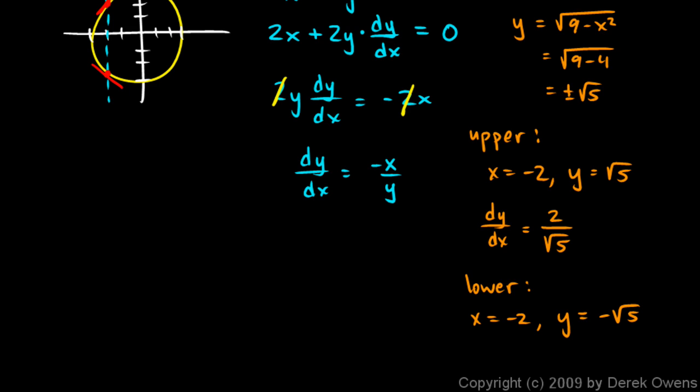And the lower point here has an x value of negative 2 and a y value of negative square root of 5. So the derivative dy dx is negative x over y. So that's negative 2 or negative negative 2, which is just 2 over negative square root of 5. And we typically put the negative sign either out front or up top. But those are our two answers. That's the slope of the graph at x equals negative 2.